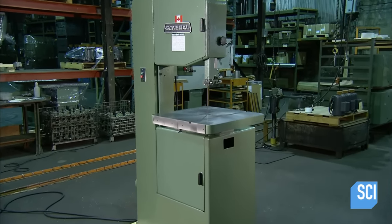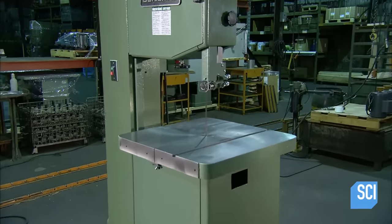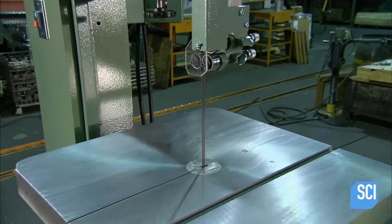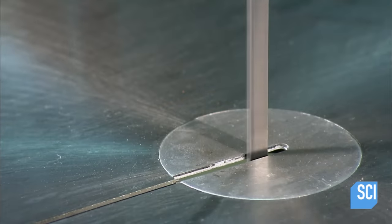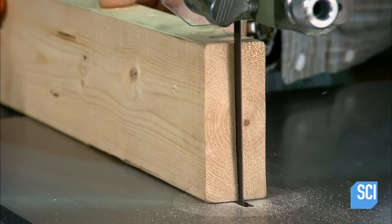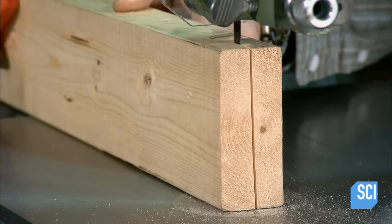This is an industrial bandsaw designed to cut wood, aluminum, and composite material such as plexiglass. It can cut pieces up to 12 inches thick and can divide a board up to 40 inches wide into two equal sections.